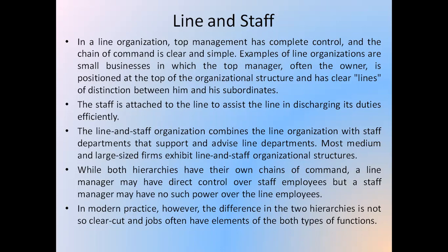While both hierarchies have their own chains of command, a line manager may have direct control over staff employees, but a staff manager may have no such power over line employees. Both the line organization and staff personnel have their own hierarchy of commands, but a line manager has direct control over staff personnel, whereas the staff manager may not have direct control over line employees. The staff manager may not have the power to issue direct orders to line personnel. In modern practice, the difference between the two hierarchies is not so clear-cut and jobs often have elements of both types of functions.